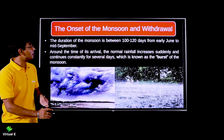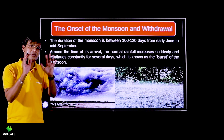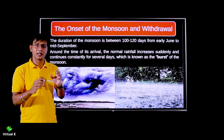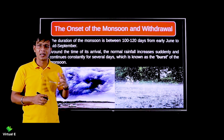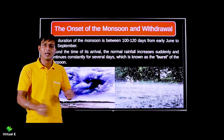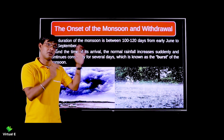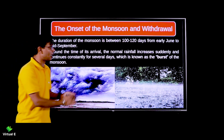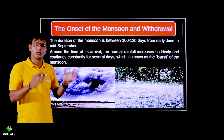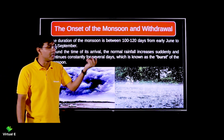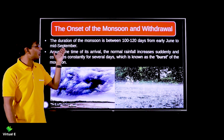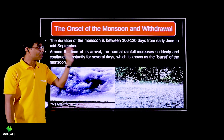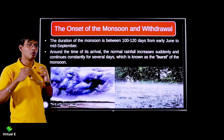Now let's begin with the onset and withdrawal of the monsoon. When learning about the seasons, keep in mind the concepts I am going to tell you. The Indian monsoon season is about four months - around 120 days. It begins in early June and ends in mid-September, when it withdraws from most of the country.